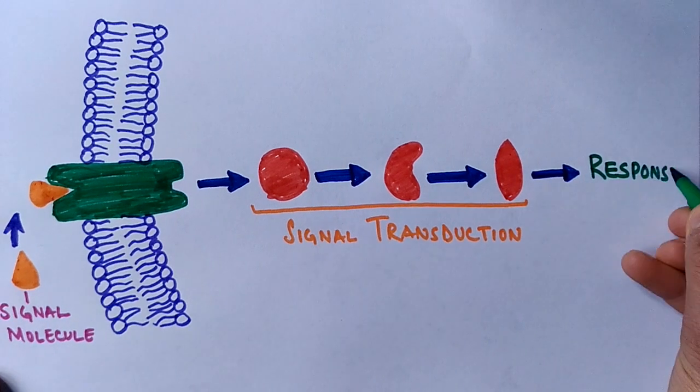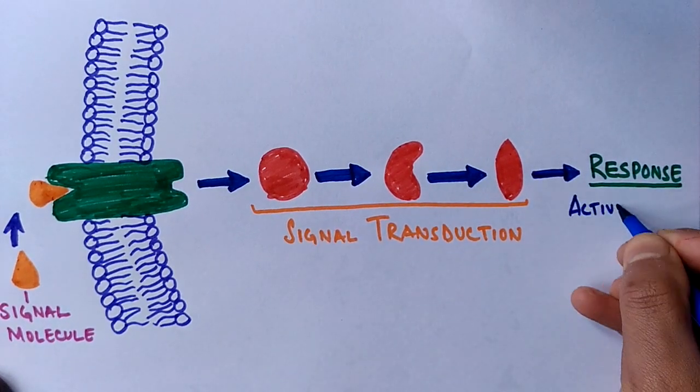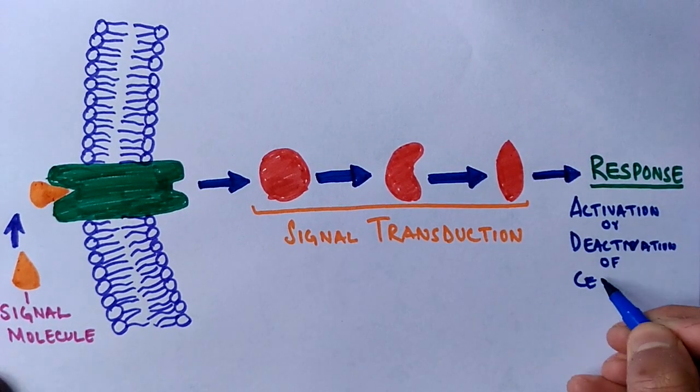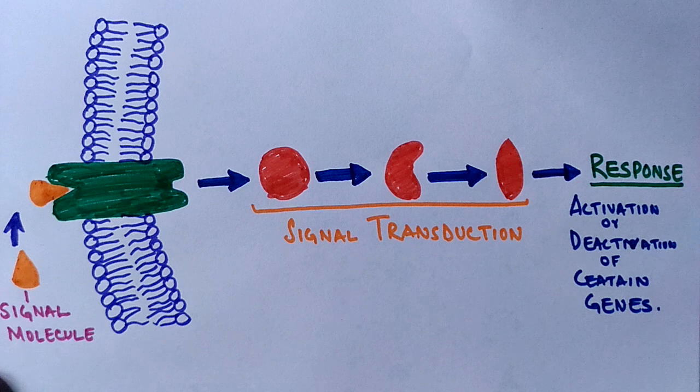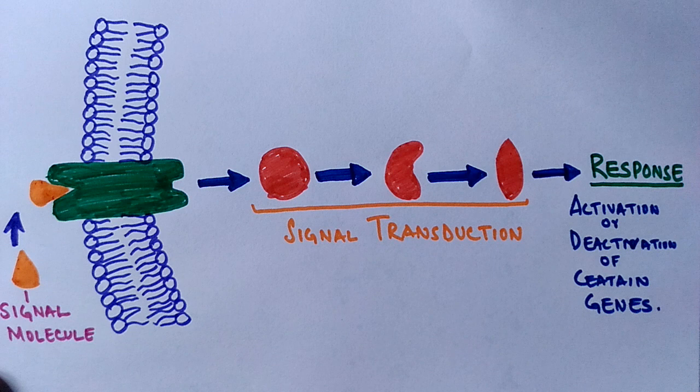And ultimately we get the response in the form of activation, deactivation, or modification of certain genes or cellular processes. So from reception through signal transduction and ultimately the response from a cell, this all constitutes the basic principle of cellular communication.